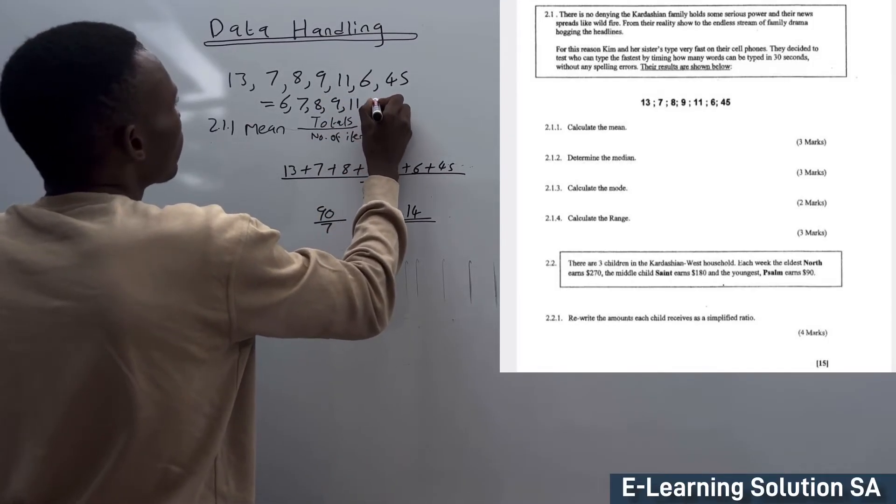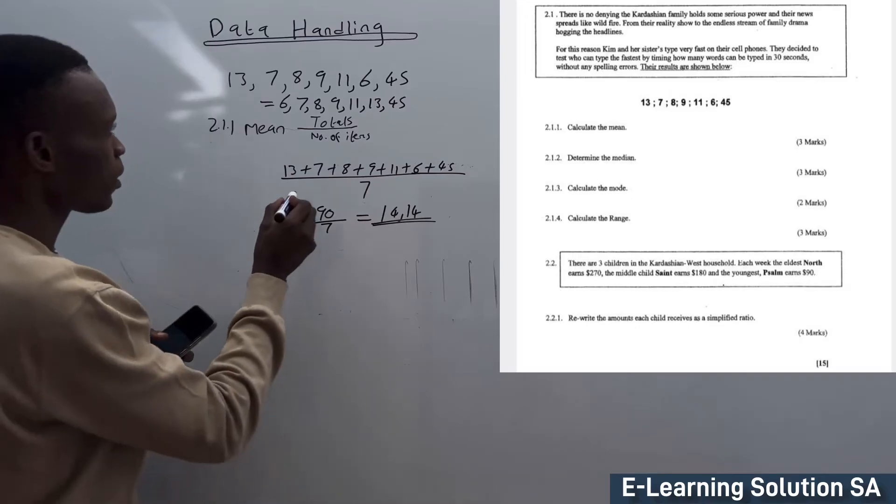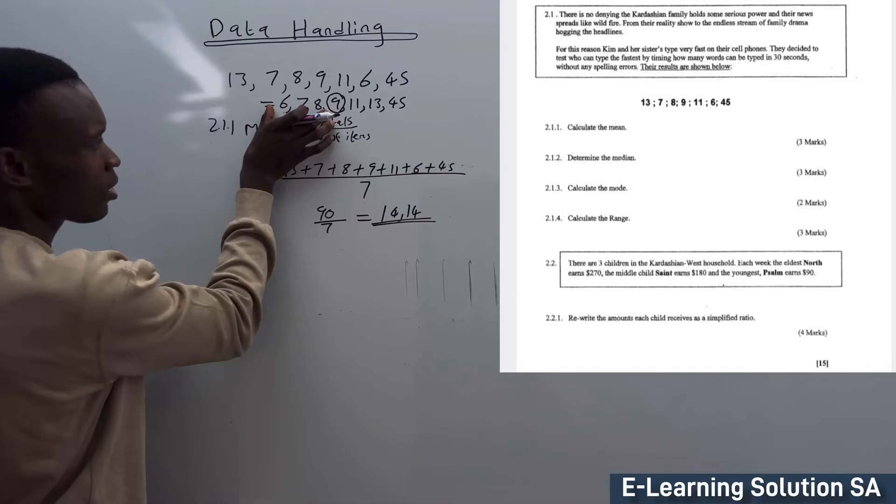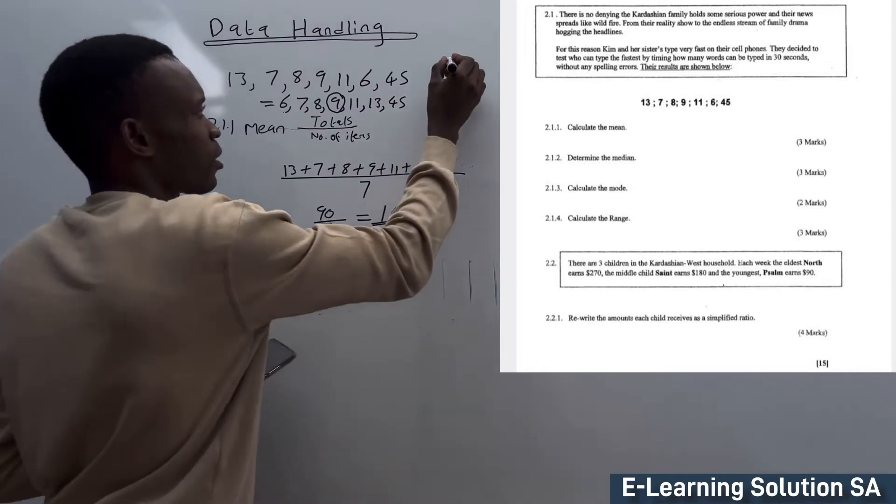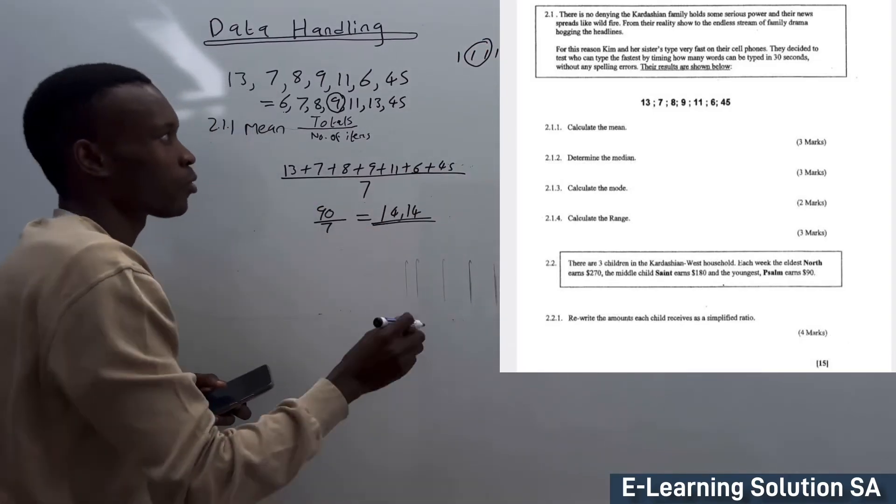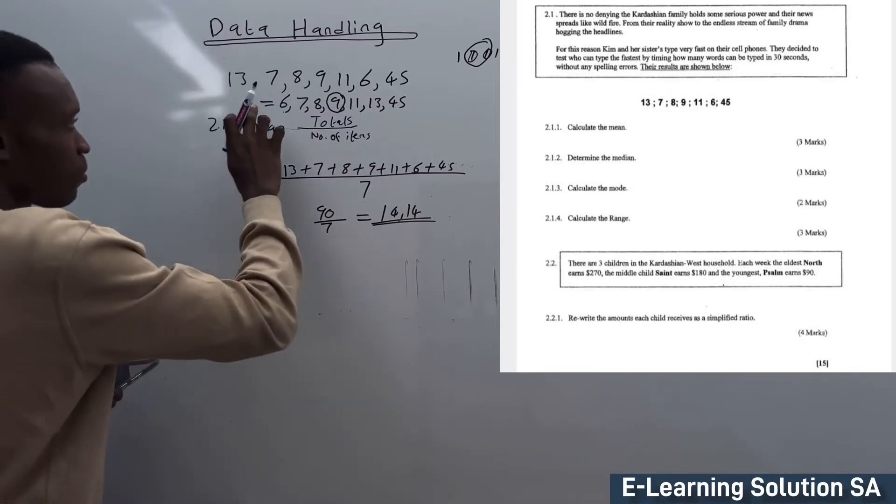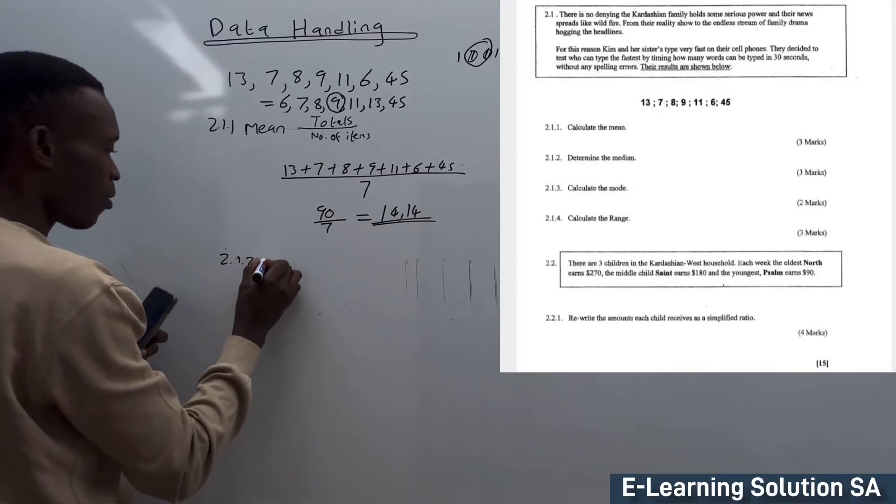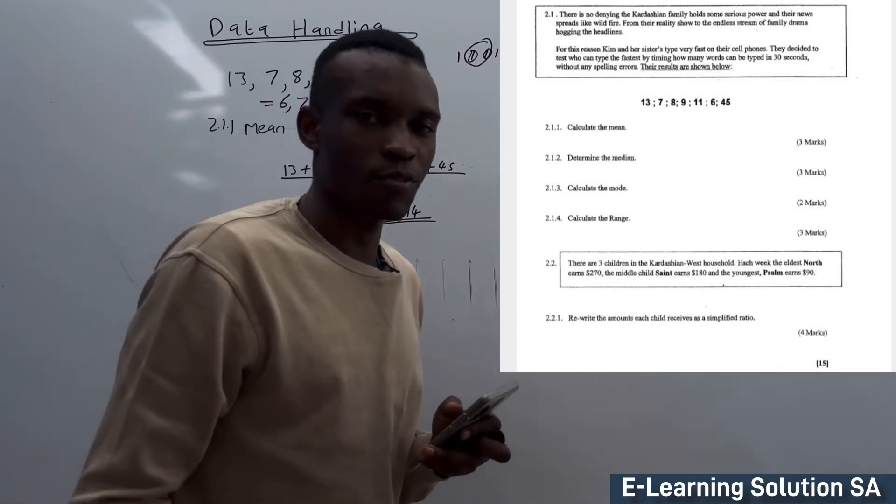Let's pick the middle one. If you check, 9 is the middle one because we have 3 on this side and 3 on this side. If you have four numbers, the middle would be the two middle numbers, but in this case it's simple. 2.1.2: Our median is equal to 9. 2 marks for that.